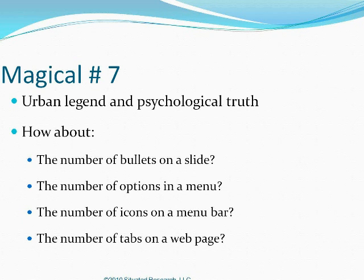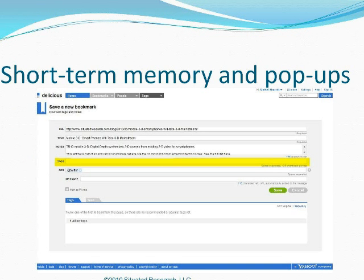Let's talk about human memory — everyone hears about the magical number seven. It's both an urban legend and a psychological truth. How many bullets on a slide, how many options in a menu, how many icons on a menu bar, how many tabs on a web page? The magic is the number seven. On a website, you want fewer than seven menu options in your navigation — people can't comprehend more than that, and usability testing has proven it.